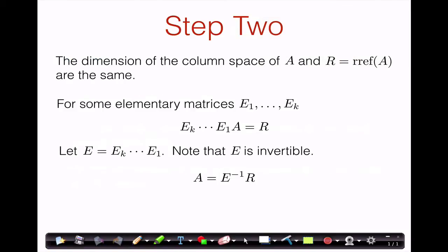We'll call R the reduced row echelon form of A. Since R is the reduced row echelon form of A, we can obtain R by doing elementary row operations on A. Therefore, if we let these elementary row operations be represented by elementary matrices E1 through Ek, then the product of E1 through Ek times A is equal to R.